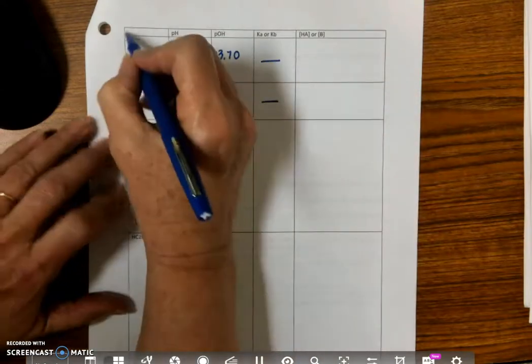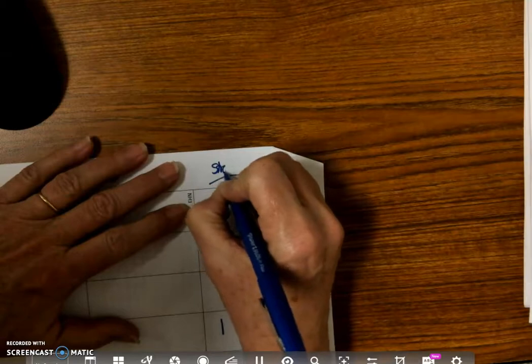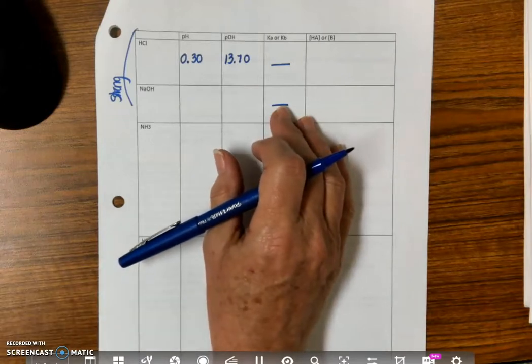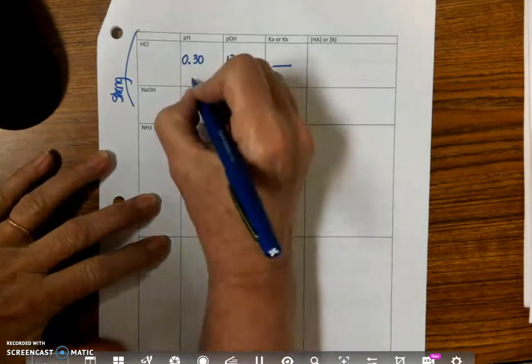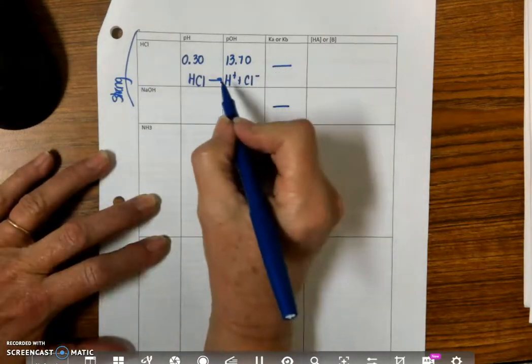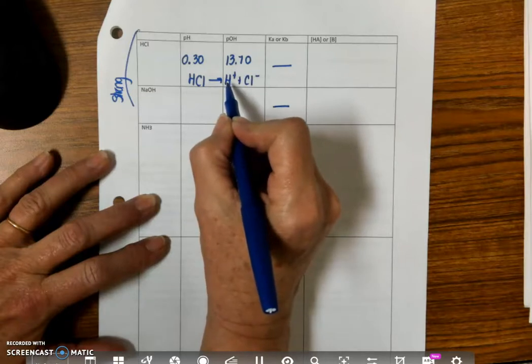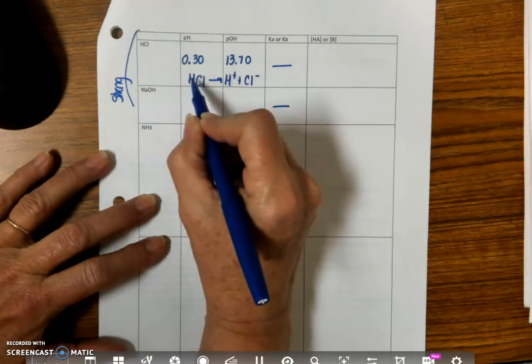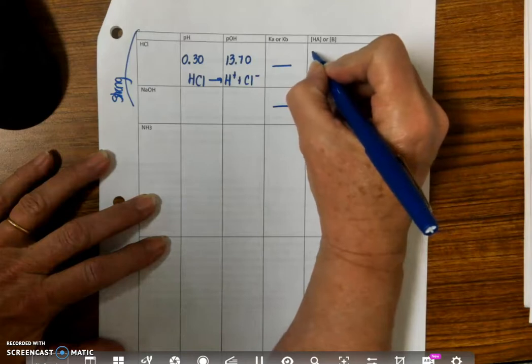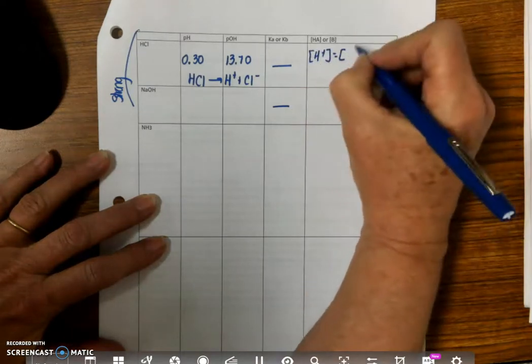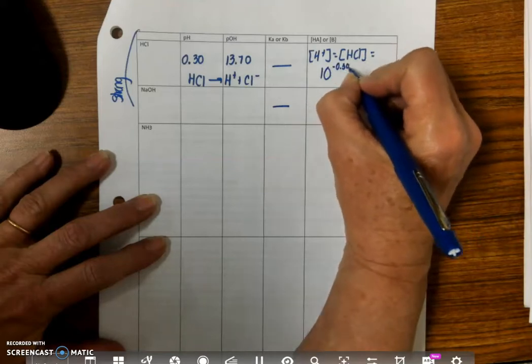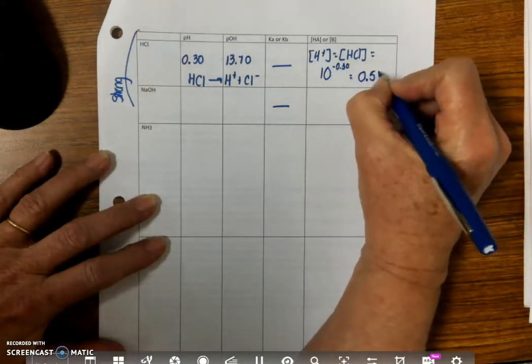And remember for both my strongs, these are strong. So I don't need a Ka or Kb with these. If you use them, you can find them. They're really high numbers, like in the millions, I can't remember now. But you don't need them, alright? Because HCl goes to H+ plus Cl-, and whatever concentration of hydrogen ion I have, that's how much of the original acid I had. Alright, so all I need to do is the hydrogen ion concentration, which is equal to HCl, is equal to 10 to the negative 0.30, and that is 0.50 molar.